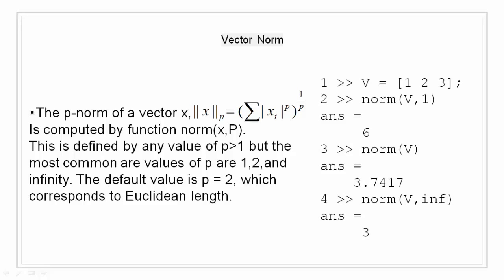The example for the same has been shown on the right. We define a vector v with elements 1, 2, 3. First, I find the norm with p equal to 1 by passing norm(v, 1) and I get an answer of 6. Similarly, with p equal to 2, the default value, I type norm(v) and get the answer 3.7417. For p equal to infinity, I write norm(v, inf) and I get the answer 3. This example shows how to compute vector norm with the three most common values of p.